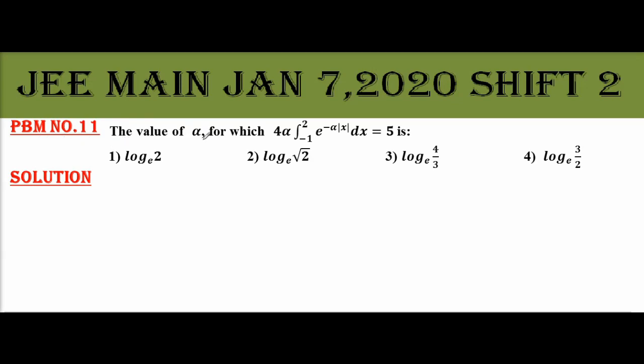Problem number 11: the value of α for which 4α integral from -1 to 2 of e^(-α|x|) dx equals 5 is.